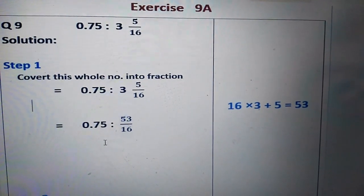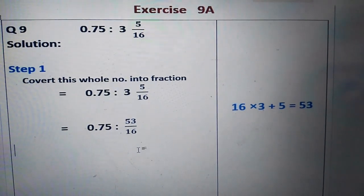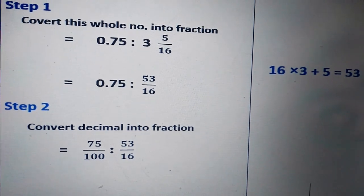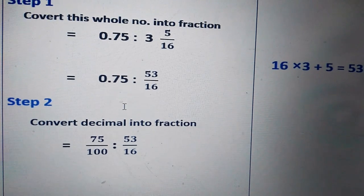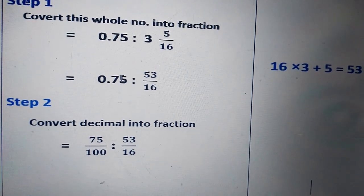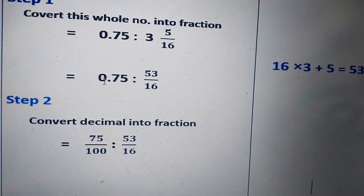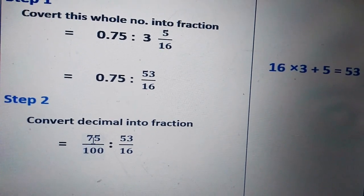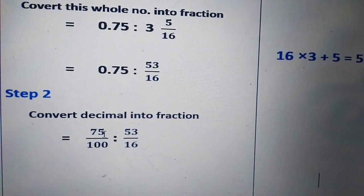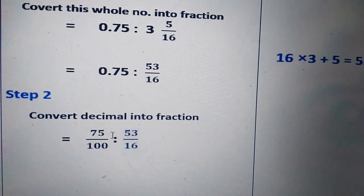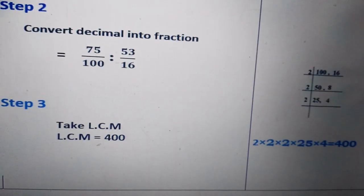Now let's move to step number two. We convert the decimal into a fraction. Point seven five becomes seventy-five divided by hundred. So we now have both ratios in fraction form: seventy-five by hundred, ratio fifty-three by sixteen.